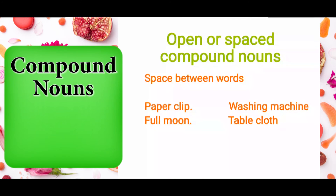Open or spaced compound nouns have a space between words. For example, 'paper clip' has two words with a space in between. These kinds of nouns are called open or spaced compound nouns. Examples include: paper clip, washing machine, full moon, and tablecloth.